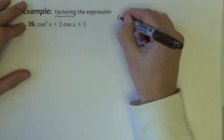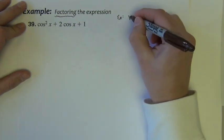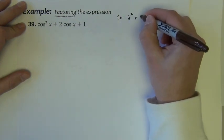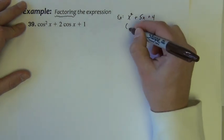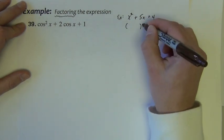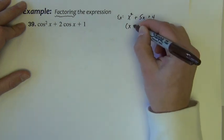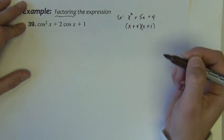For example, if I were to give you like maybe x squared plus 5x plus 4 and the directions were to factor it, then we would know that that's two binomials, x plus 4 and x plus 1.